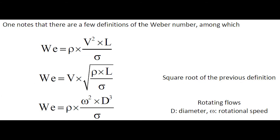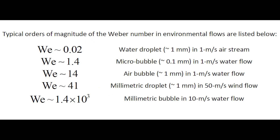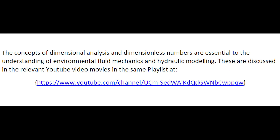There are a few definitions of the Weber number shown here, with the first definition being most commonly used in environmental fluid mechanics and operational hydraulics. Typical orders of magnitude of the Weber number in environmental flows are shown here. The concepts of dimensional analysis and dimensionless numbers are essential to the understanding of environmental fluid mechanics and hydraulic modeling, and these are discussed in a number of relevant YouTube video lectures.